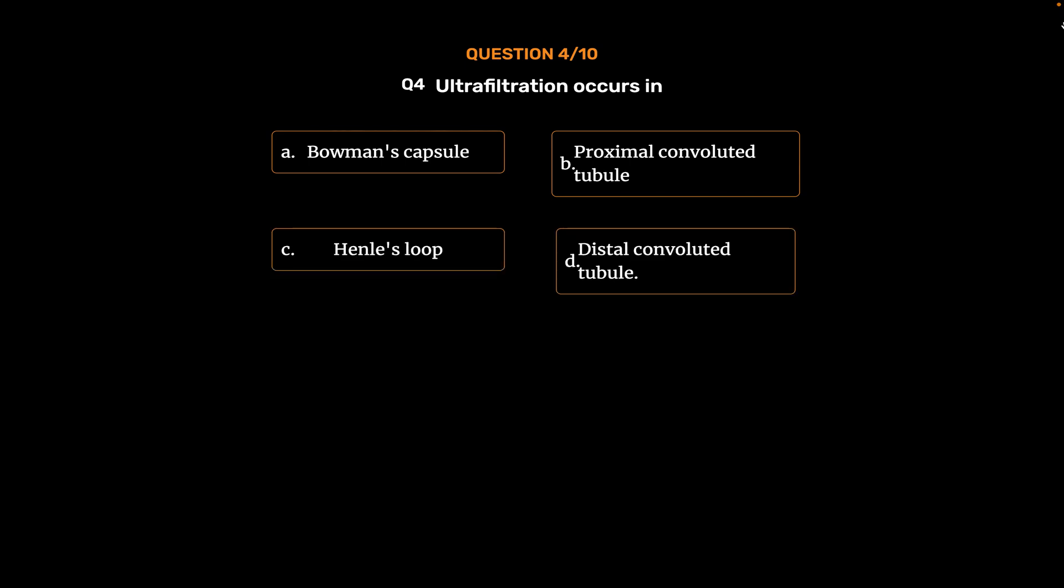Question 4: Ultrafiltration occurs in: Option A, Bowman's capsule; Option B, Proximal convoluted tubule; Option C, Henle's loop; Option D, Distal convoluted tubule. The correct answer is Option A, Bowman's capsule.